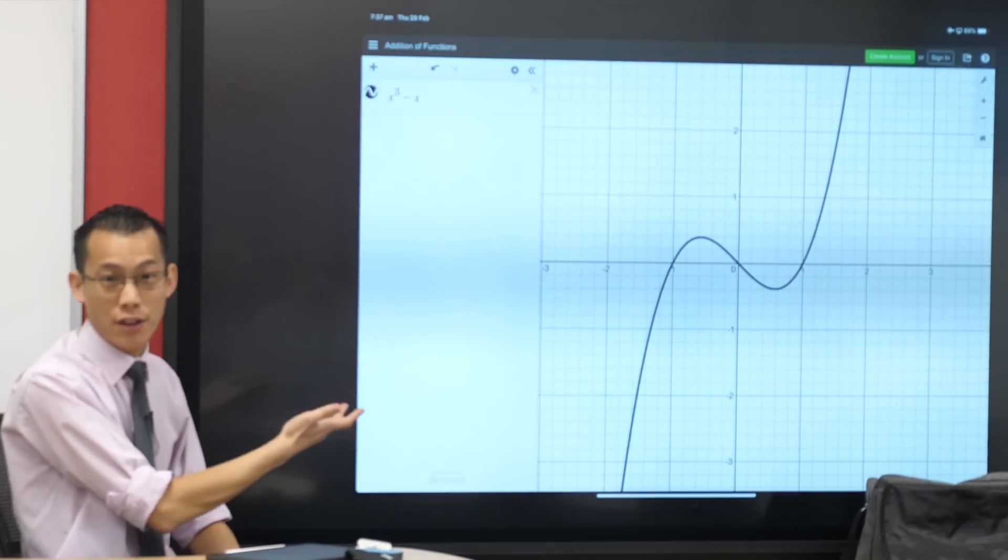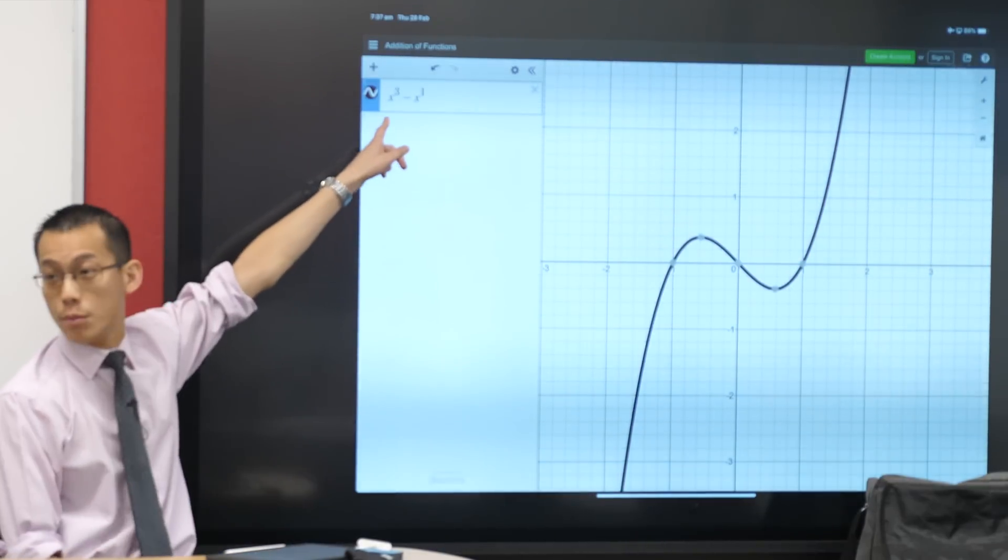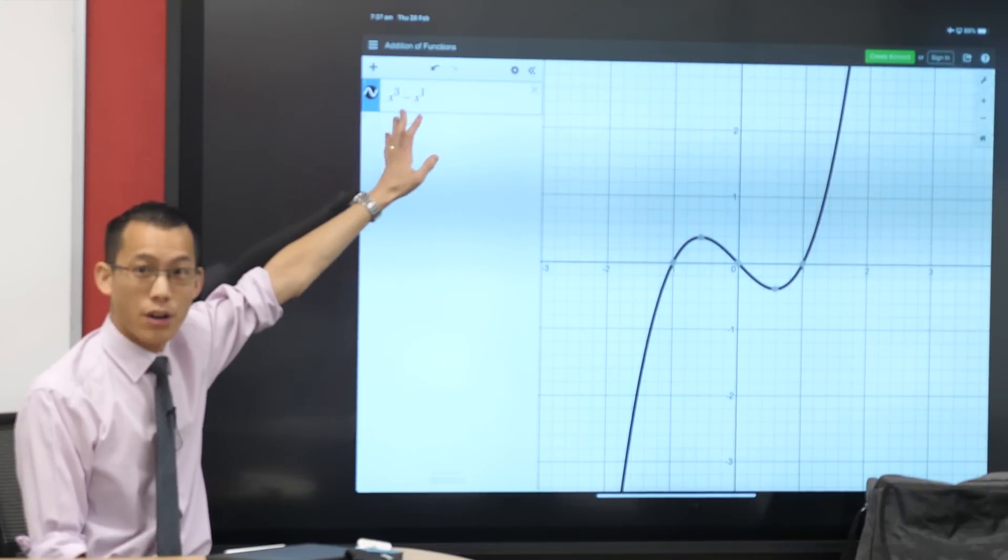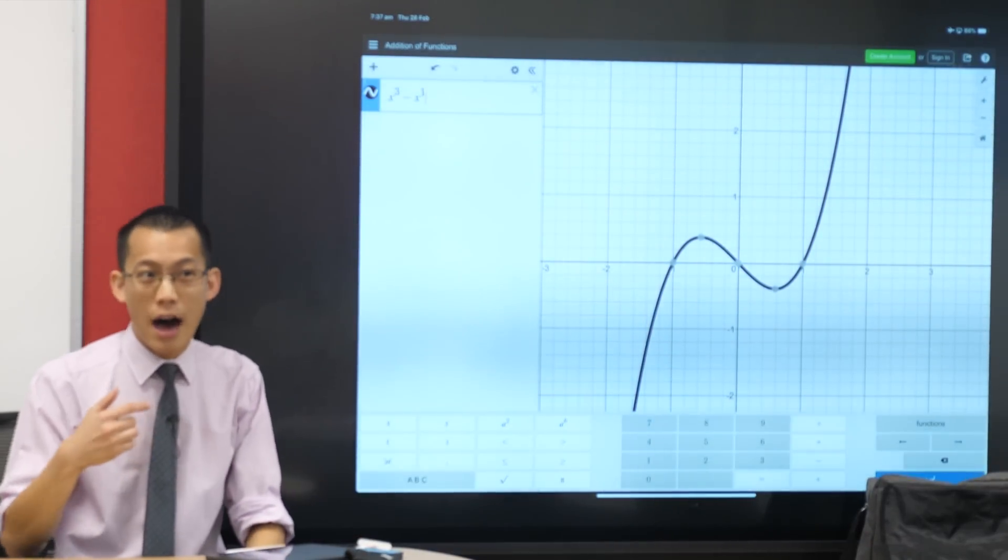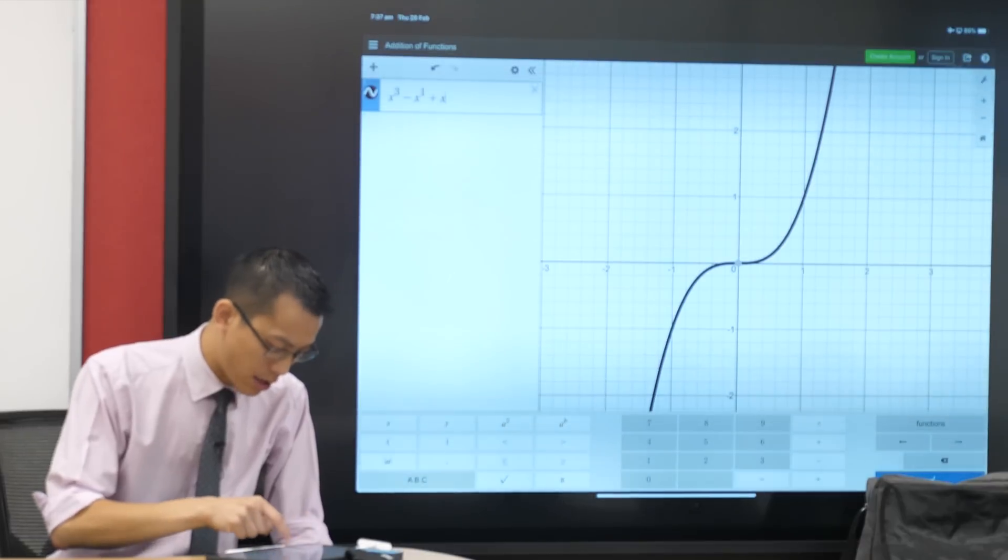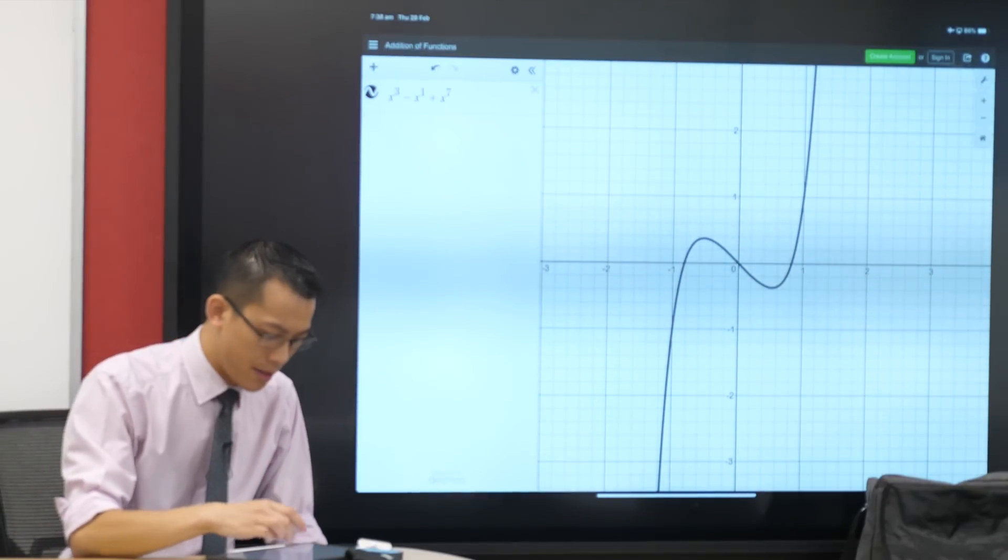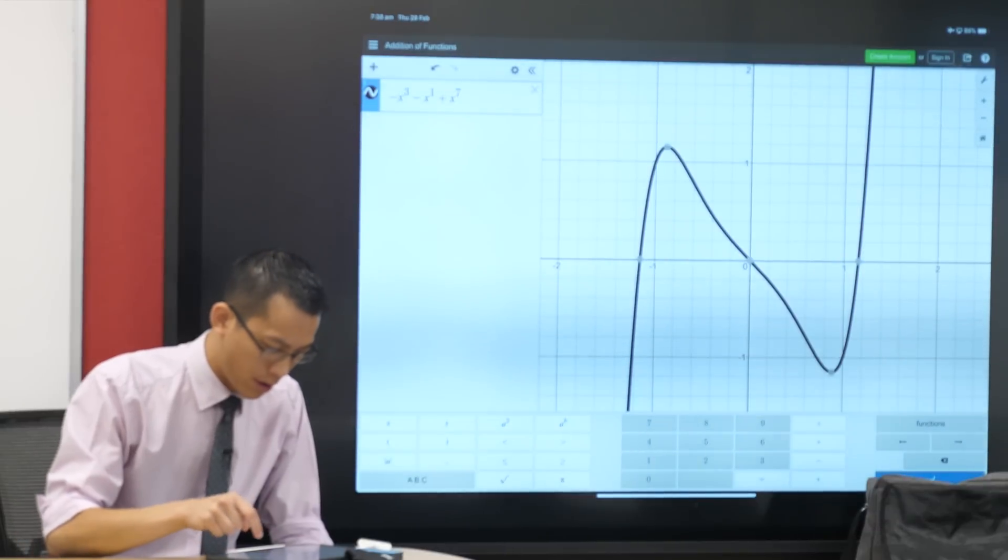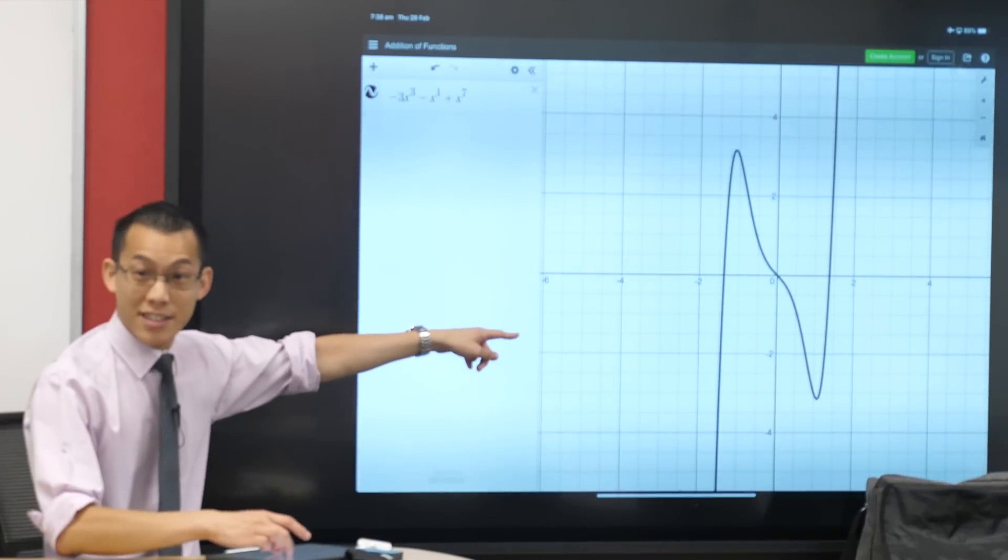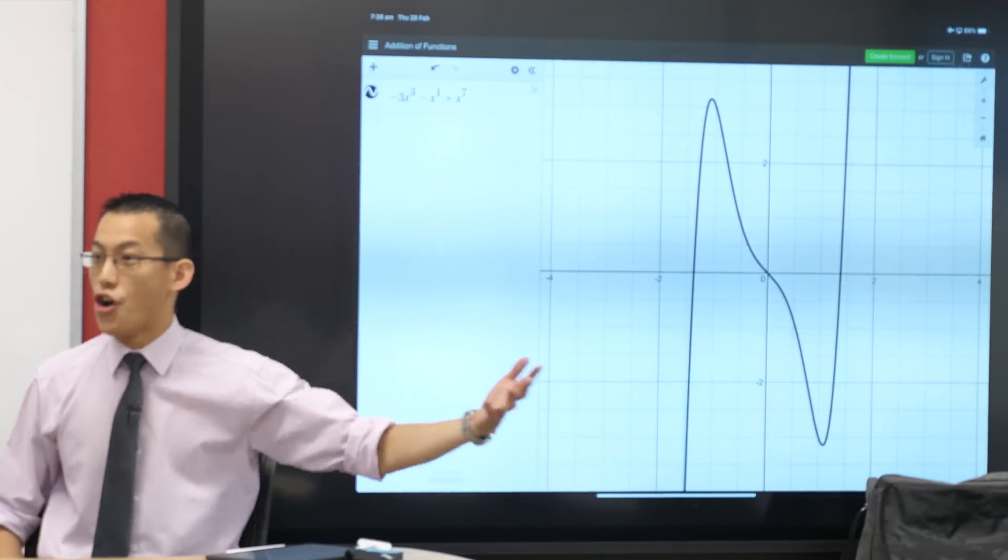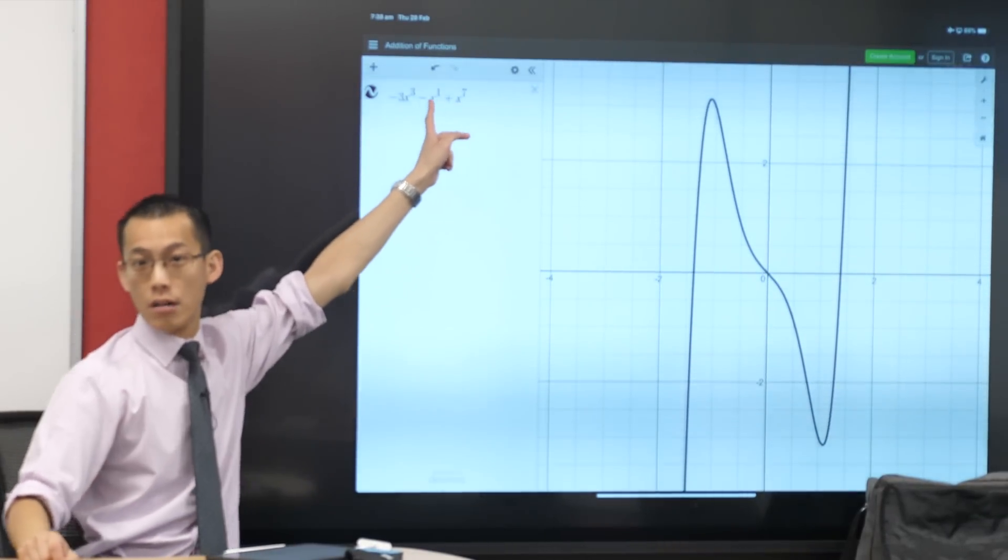The way I knew that this would give me an odd function, I didn't know what it was going to look like. But the reason I knew it was just have a look at what this graph is. It's actually x cubed take away x to the 1. So all my powers are odd. They're all odd numbers. And so whatever I'm going to get out is going to be odd.